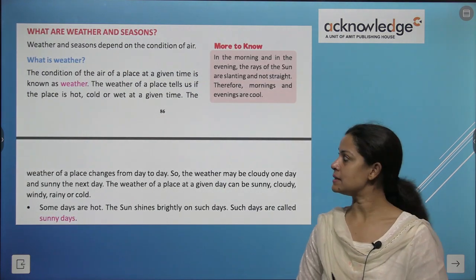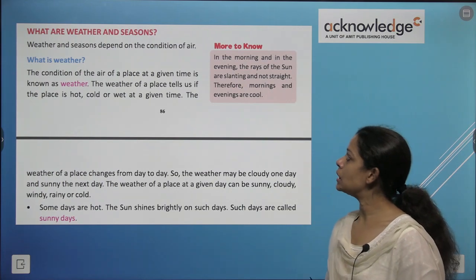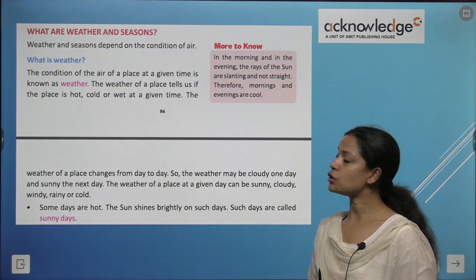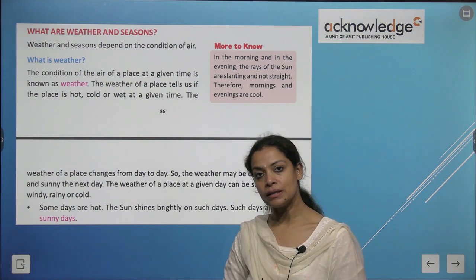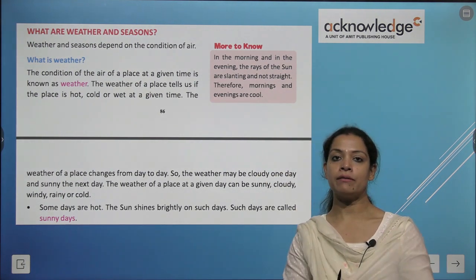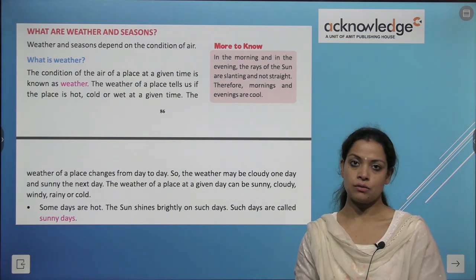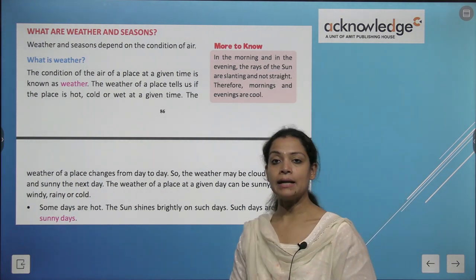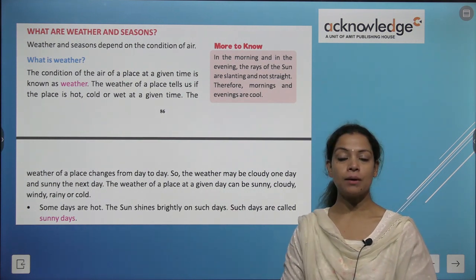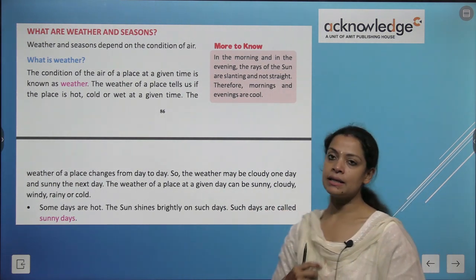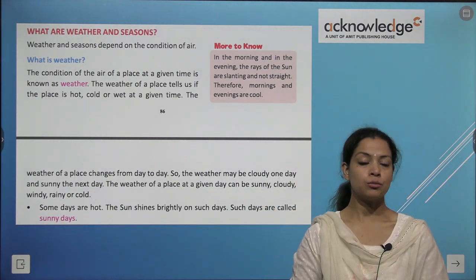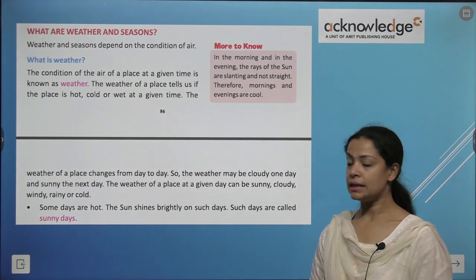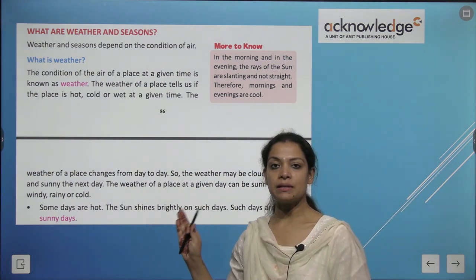Now, what are weather and seasons? Weather and seasons depend on the conditions of the air. The condition of the air at a place at a given time is known as weather. Weather tells us if a place is hot, cold, or wet at a given time. The weather of a place changes from day to day — it may be cloudy one day and sunny the next. The weather at a given day can be sunny, cloudy, windy, rainy, or cold.